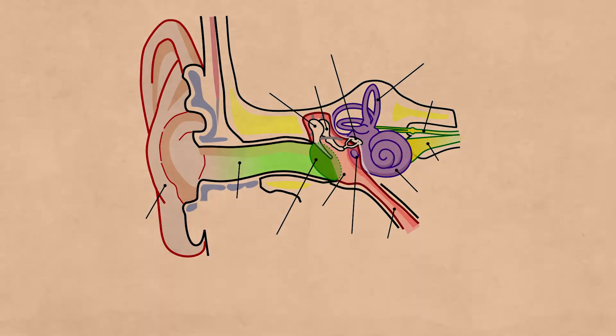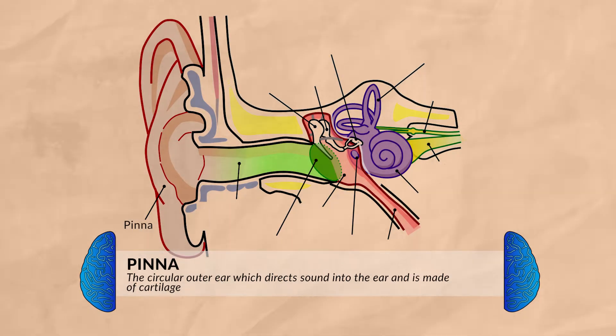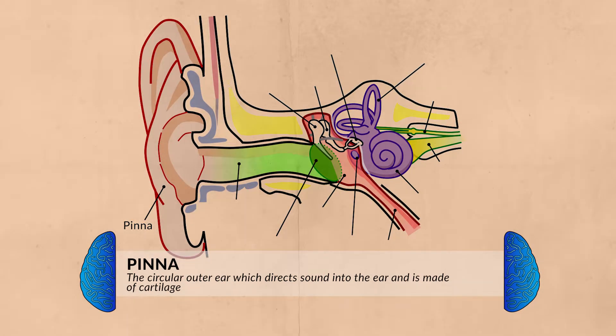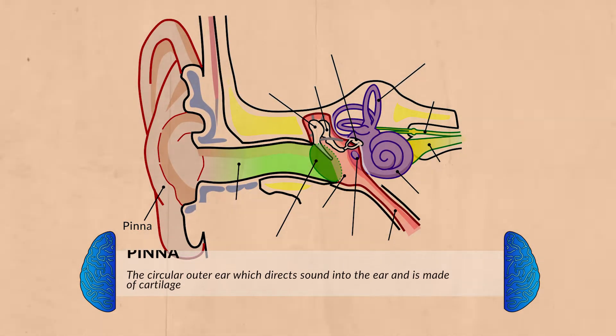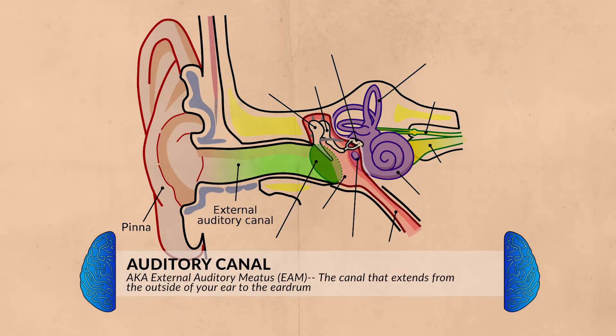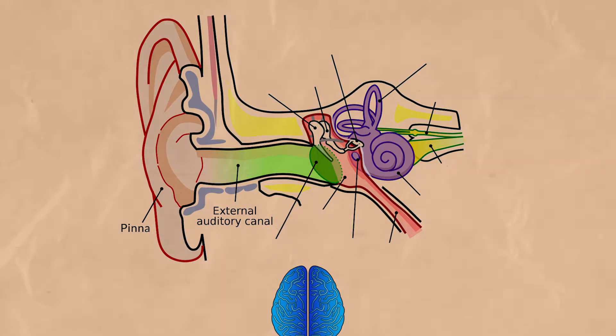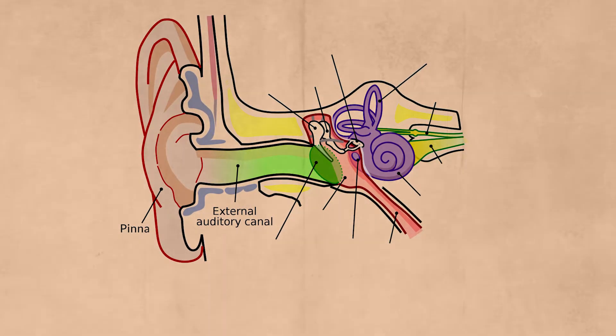The outer ear is what receives sound and it guides it into the ear canal. The outer ear is made up of the pinna, which is the outer part of the ear. This is what you see when you're looking at the side of someone's head. It is made up of cartilage and directs the sound. Next is the auditory canal. This is the entrance to your ear. This tube funnels the sound into your ear. This canal sends the sound from the pinna to the eardrum.